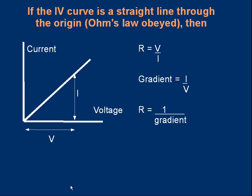Let's go back to the resistor that obeys Ohm's law. Here's its current-voltage graph — a straight line through the origin. If I wanted the resistance, I could pick any point on that graph. At that point there's a certain current and a certain voltage being applied. I can read off the current from the current scale and read off the voltage scale, so I know both values. The resistance is therefore V over I at that point.